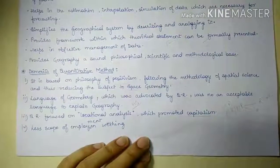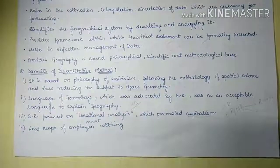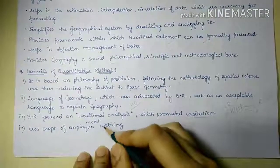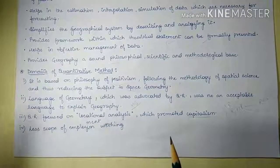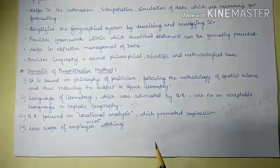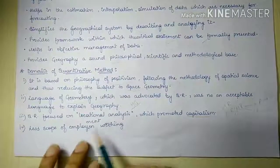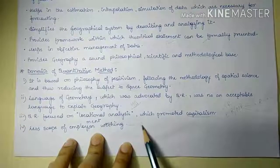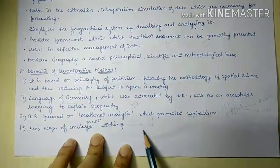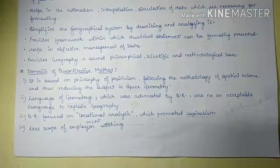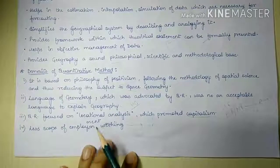The next demerit is there is less scope of employment in quantitative method. Because it tries to maximize profit, industrialists try to use machinery for faster and more accurate results. Therefore, employment for poor and non-industrial people is reduced, resulting in less scope of employment in the quantitative method.